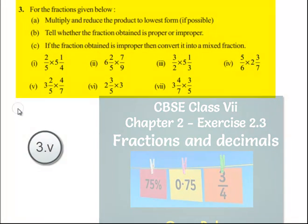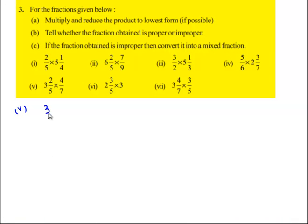Now let us move on to the fifth bit of the question. 3 2/5 multiplied by 4/7.